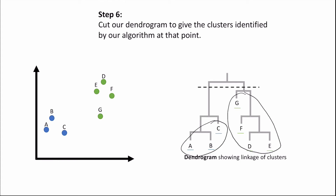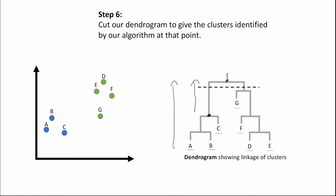Sometimes it can be difficult to determine exactly where to cut the dendrogram, so you may have to explore different cuts and the resulting clusters. One thing to note is that as we go up the dendrogram, the distance between clusters increases. For example, the cluster containing A, B, and C and the cluster containing all points have quite a large distance, showing there is a large gap between them. It can be a good idea to cut the dendrogram where these large lines appear, though this may be difficult with large datasets.